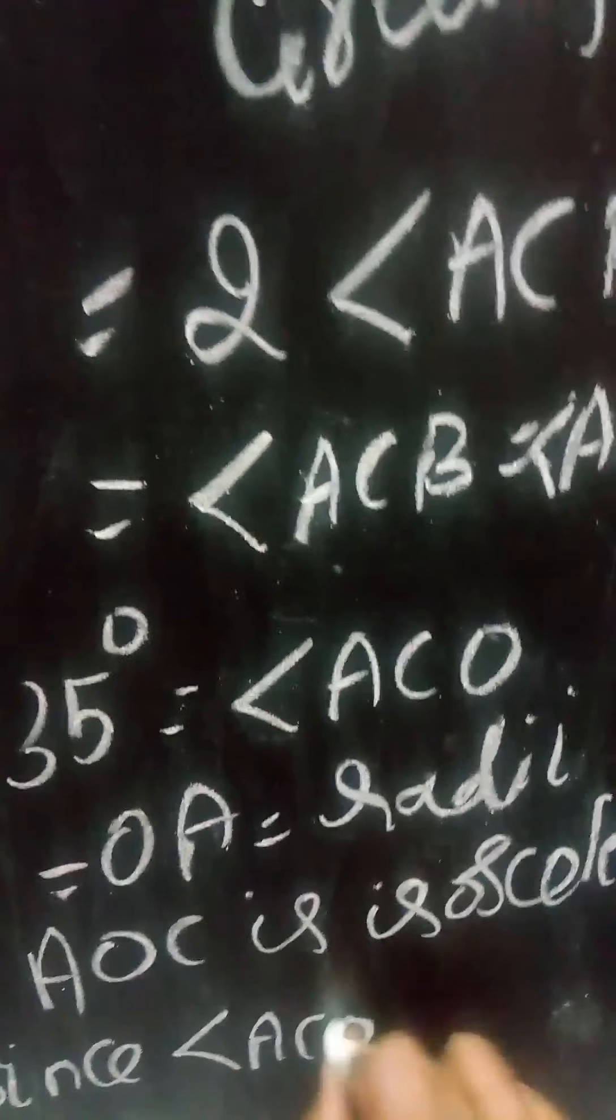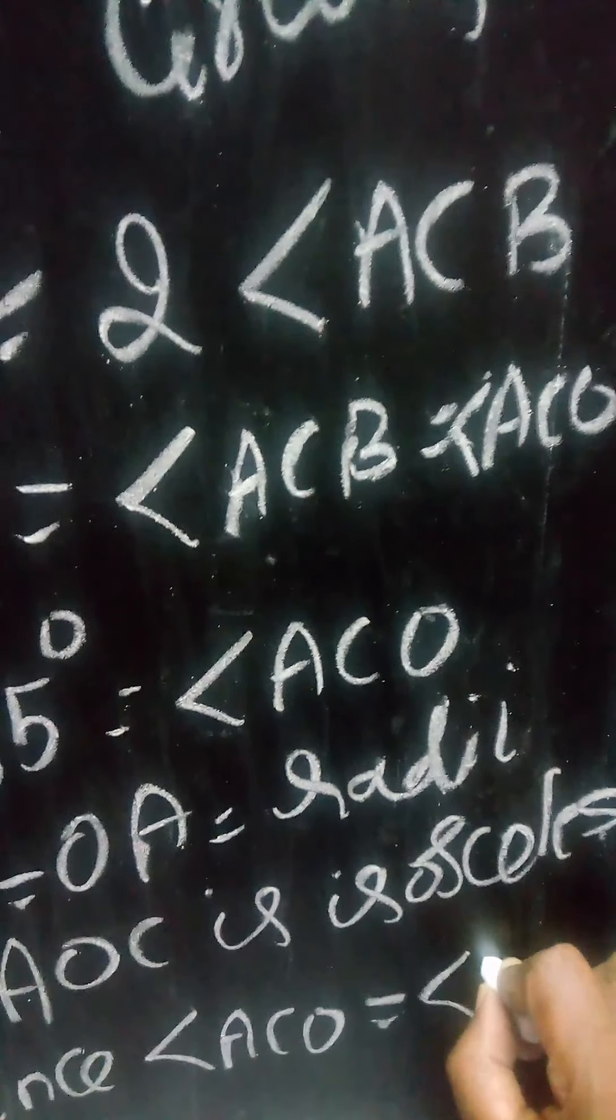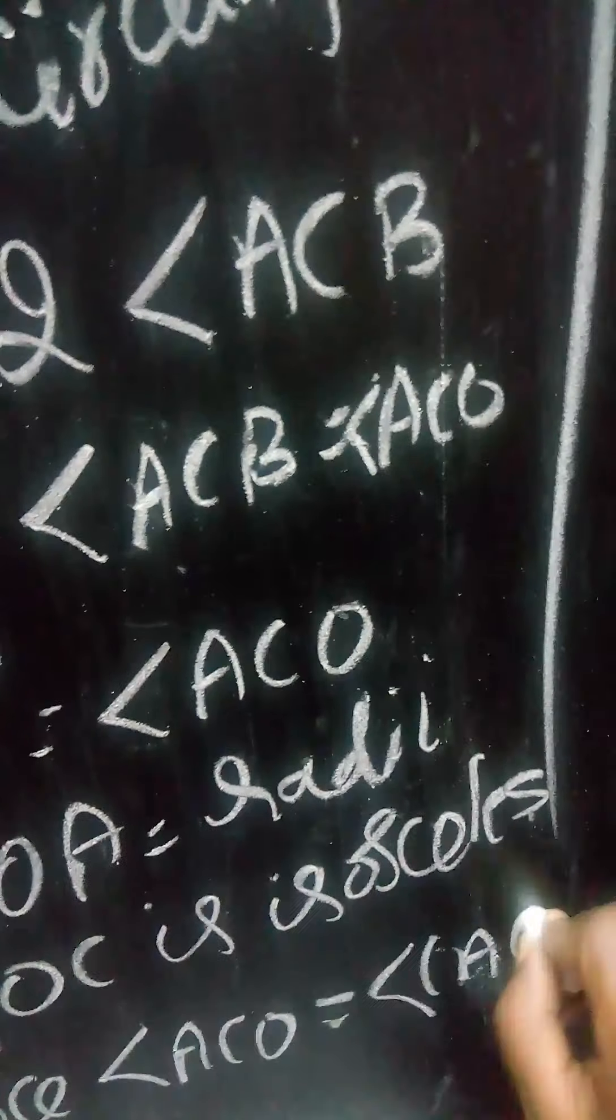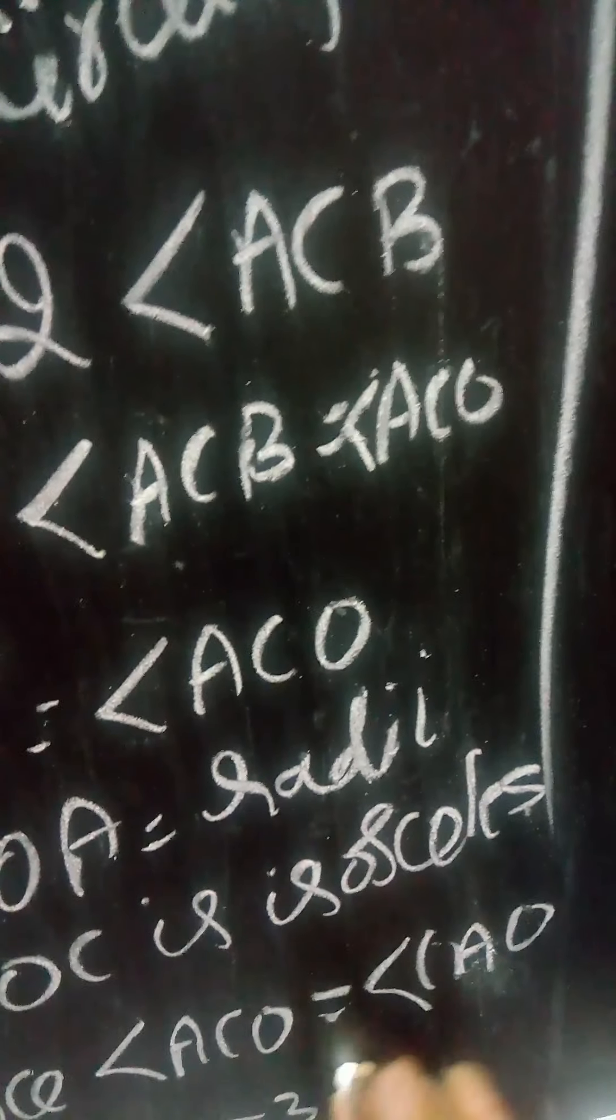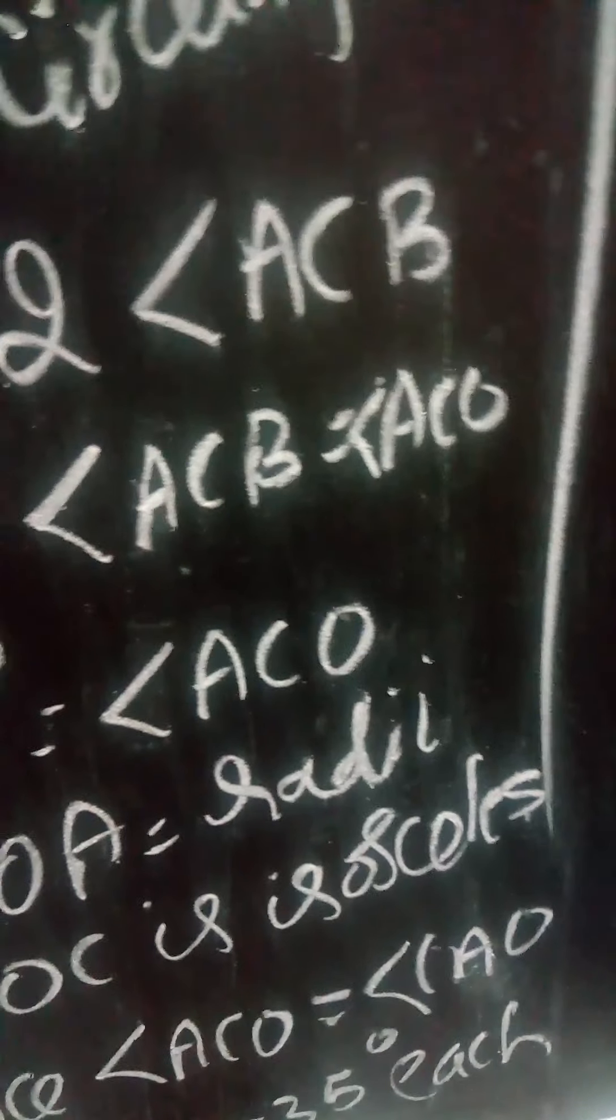So since angle ACO equals angle CAO, which equals 35 degrees, these are base angles.